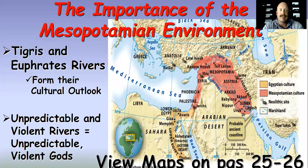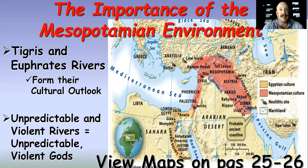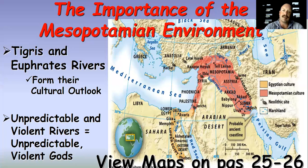Mesopotamian civilization is one that will undergo lots of turmoil and unpredictability, and it's going to be reflected in their religion. Their gods are going to be gods that are unpredictable and violent — gods that need to be appeased constantly by humans sacrificing animals and making offerings. There's no reliable record of human sacrifice in Mesopotamia, so we're mainly looking at animal sacrifice and other offerings made throughout this culture. Even then, the gods may not be appeased.